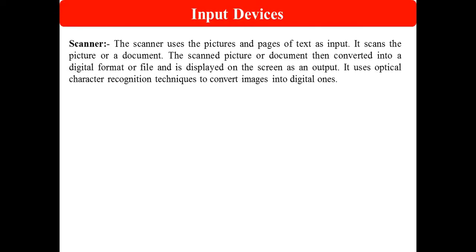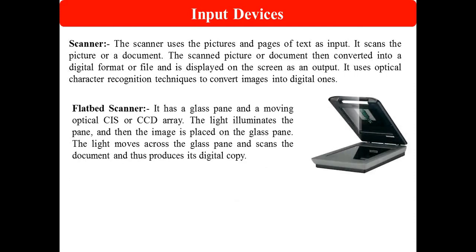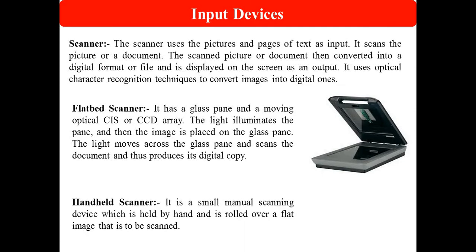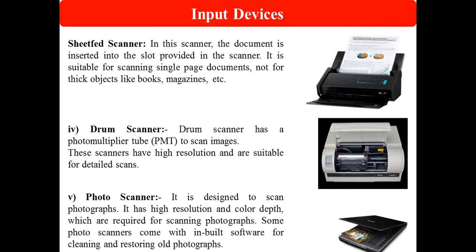The third input device is the scanner. A scanner uses pictures and pages of text as input — it scans a picture or document and converts it into a digitally formatted file, then displays the output on screen. A flatbed scanner uses a CCD light illuminating the plane; the image is pressed on the glass pane, and the light moves across the glass pane to scan the document, producing a digital copy. Other types include handheld scanners, drum scanners, and photo scanners.